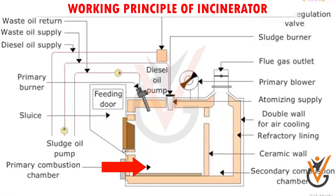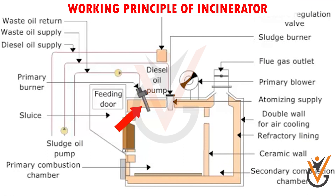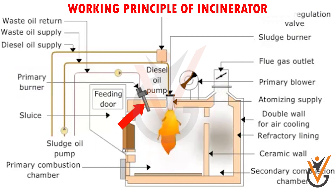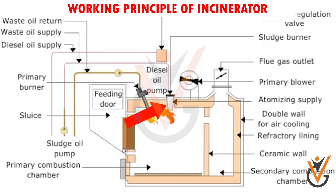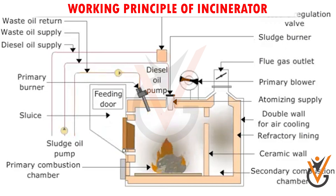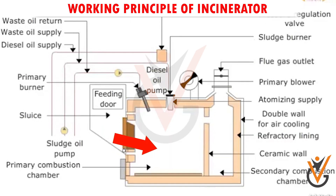Working principle of incinerator: The incinerator is designed with a primary combustion chamber for burning sludge oil or solid waste, and a secondary combustion chamber for burning out uncombusted exhaust gases. The primary combustion chamber is equipped with a primary burner. Diesel oil is supplied to this burner for initial ignition. After this, the sludge oil is supplied to the main burner until it ignites, then the primary burner is switched off either automatically or manually. Atomizing air is provided to the sludge burner for efficient combustion. A pressure regulating valve on the sludge return line adjusts the quantity of sludge entering the conversion space. The heat from the primary burner will dry out and start burning the solid waste and/or ignite the sludge oil. The large transmission area in the primary combustion chamber optimizes the drying and burning of the solid waste.